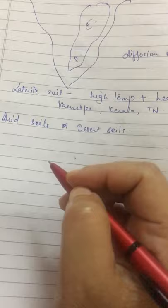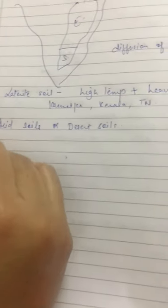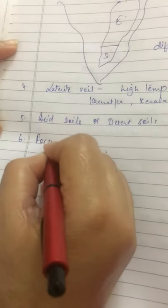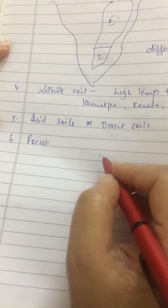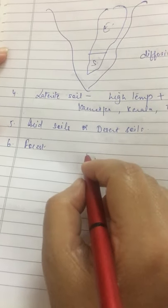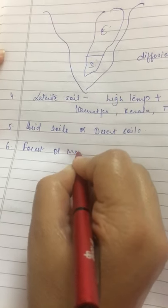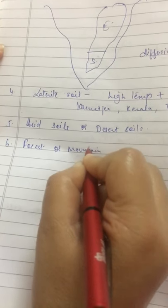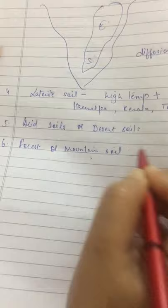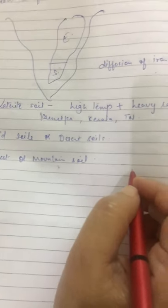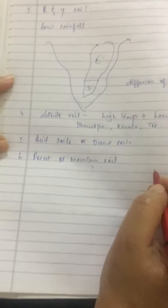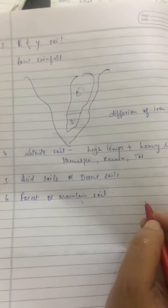The last type of soil is the forest soil or the mountain soils. These soils are found in the hilly areas of India. They are loamy and silty in valley sides and coarse in upper slopes. In snow-covered areas, these soils experience denudation and are acidic with low humus content.